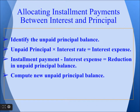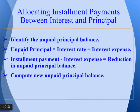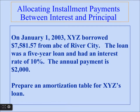Allocating an installment payment between interest and principal involves a mathematical calculation. First, identify the unpaid principal balance. Multiply the unpaid principal balance by the interest rate to get interest expense for that period. Then, subtract interest expense from the installment payment to get the reduction in unpaid principal balance. Use this data to compute the new unpaid principal balance.